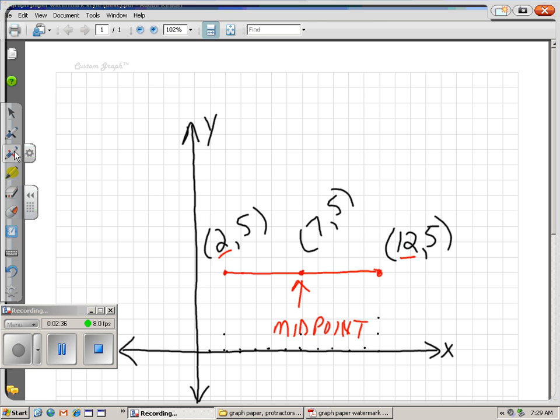So halfway between. How could we do that with math so that we don't have to draw the graph every time? Well, to find a point halfway in between, all you have to do is take the x-coordinate 2 and the x-coordinate 12, just add them up and divide by 2 because we're looking for halfway in between. So basically, we're just averaging our x's. So 2 plus 12 gives me 14. 14 divided by 2 would give me that 7.